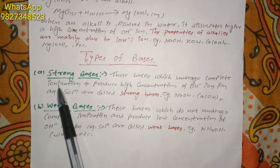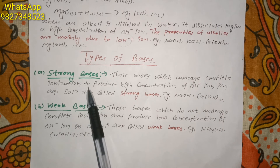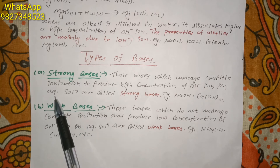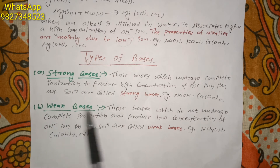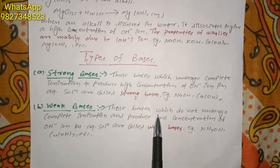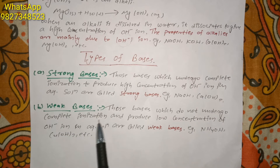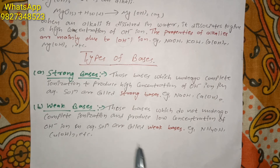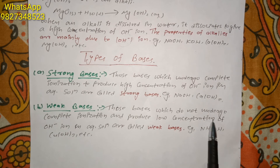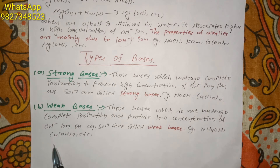There is a term called aqueous solution. Aqueous means in water. Weak bases are those bases which do not undergo complete ionization and produce a low concentration of hydroxyl ions in aqueous solution. Examples of weak bases are ammonium hydroxide and copper hydroxide.